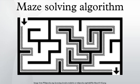Mazes containing no loops are known as simply connected, or perfect mazes, and are equivalent to a tree in graph theory. Thus many maze solving algorithms are closely related to graph theory.